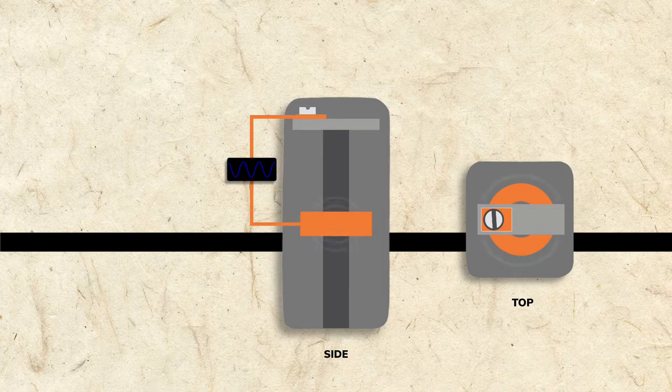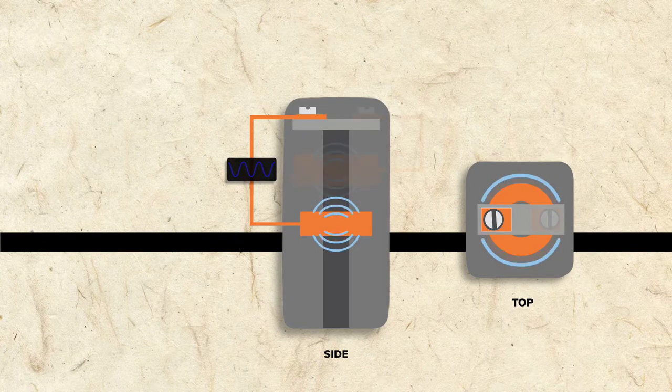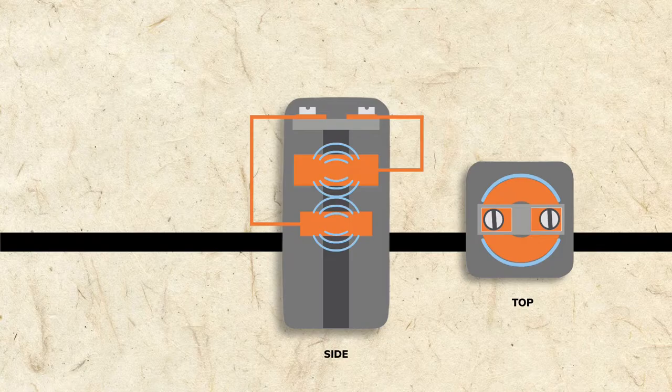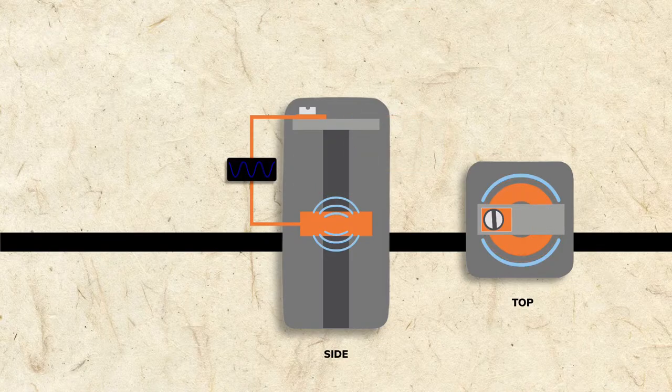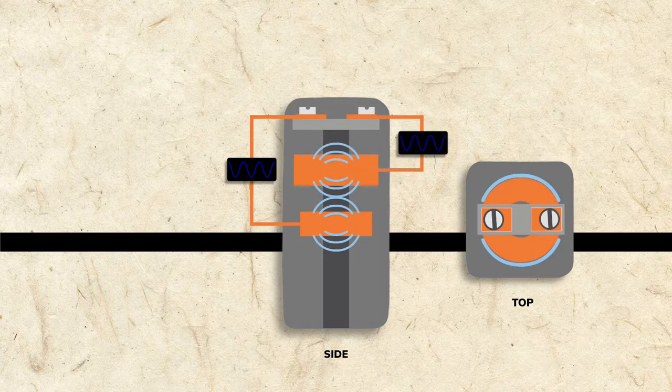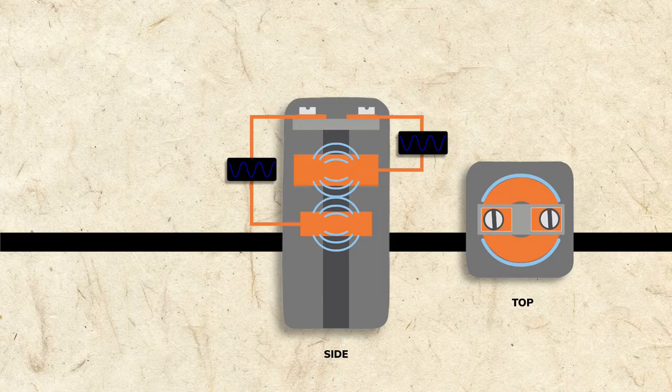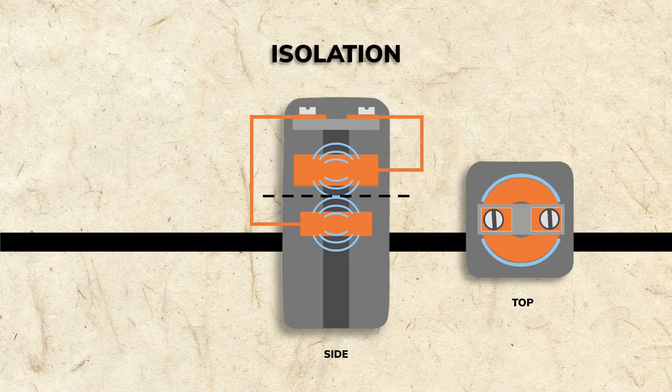The IF signal on the primary coil creates a magnetic field that's picked up by the secondary. So now the IF signal on the primary is also on the secondary. As we've learned, the coils in a transformer are magnetically coupled, but electrically isolated.